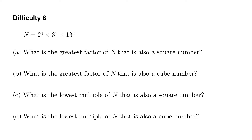To answer the first question - what is the greatest factor of n that is also a square number? - we need to understand something about square numbers. Let me give you a few examples. 49 is a square number, 144 is a square number, and so is 900.